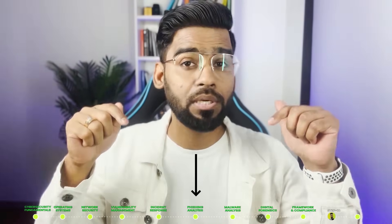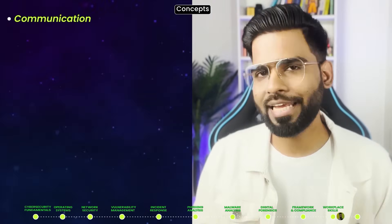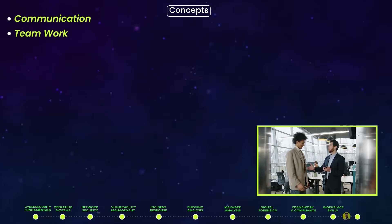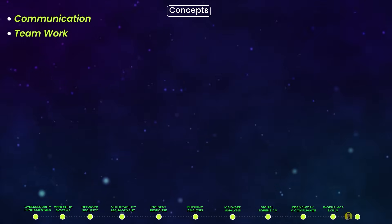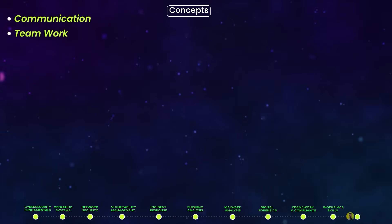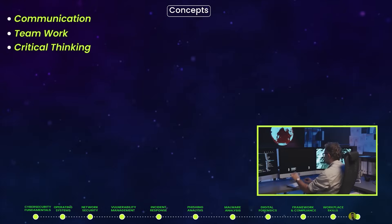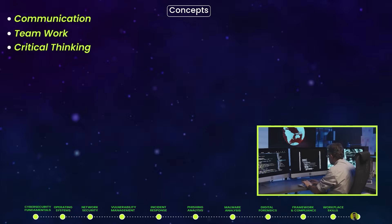Number ten: Workplace Skills — the most powerful skill that can make you unique. Key concepts include: communication (you may need to explain technical concepts to non-technical stakeholders like executives or legal teams); teamwork (collaborating with legal, IT, public relations teams, and the broader cybersecurity community); and critical thinking (making high-stakes decisions about organizational security). Links to free courses to improve workplace skills are available in the description.